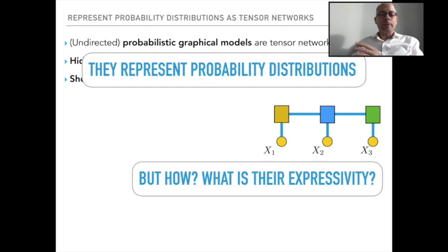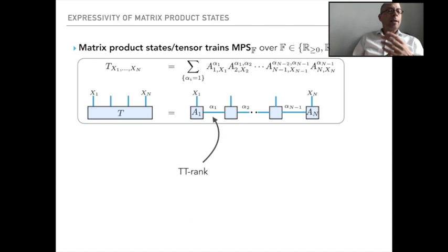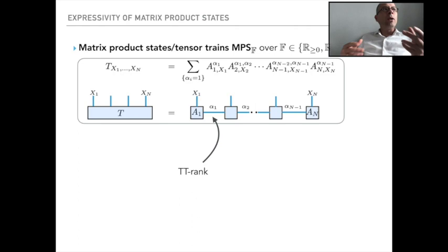One straightforward way of writing a probability distribution in terms of a matrix product state or a tensor train is one where legs stick out that represent the actual probability distribution. There's an extra connection — an extra edge of a certain rank, the TT rank or tensor train rank — that captures the correlation structure in the problem and takes the role of the bond dimension. Now, if the entries of the tensors are all non-negative reals, then we also get out a non-negative real at the end of the day, which we can interpret upon normalization as a probability distribution.